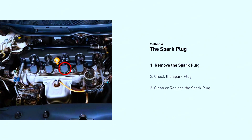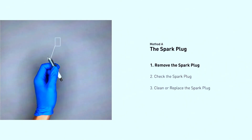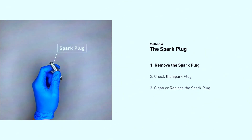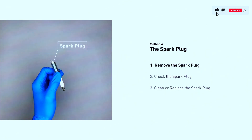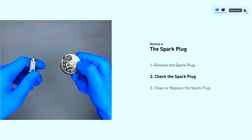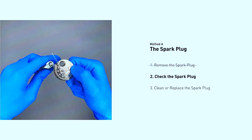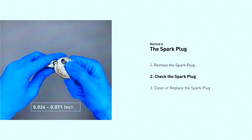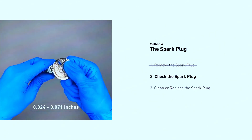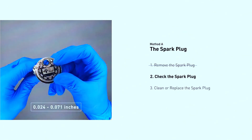Locate your spark plugs — they'll be screwed into the engine block, usually with wires or coil packs on top. Consult your manual for cylinder 4's location. Disconnect the battery for safety, then remove the spark plug wire or coil pack from cylinder 4. Use a spark plug wrench to remove the spark plug itself. Inspect it for cracks, excessive wear, or fouling (dark buildup). Gap the spark plug if necessary using a gapping tool, referring to your manual for the correct gap. Replace the spark plug with a new one following the manufacturer's recommendations. It's best to replace all spark plugs at once since they wear together.